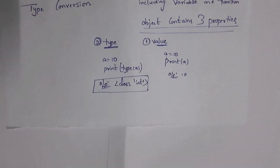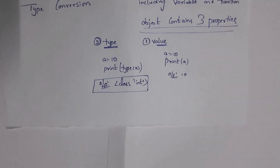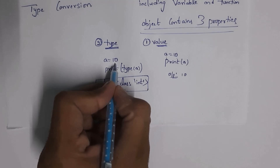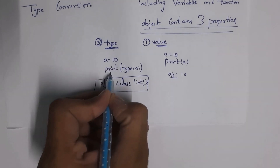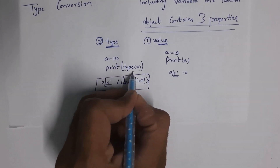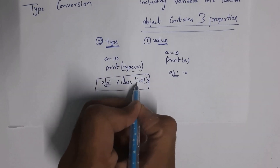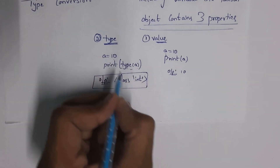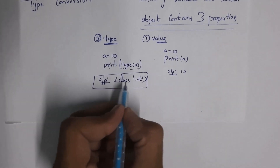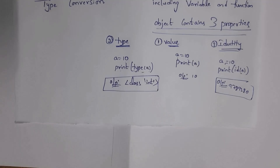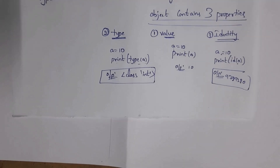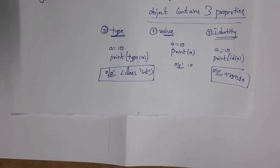The second property is type. An object can contain different data type elements. For example, if I write a = 10, and then print(type(a)), it will display the data type — class int — because 10 is an integer. By using the type() function, we can find the data type of a particular object.